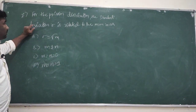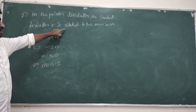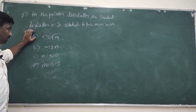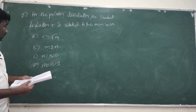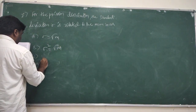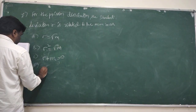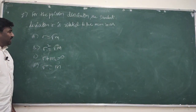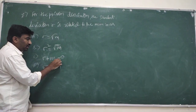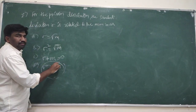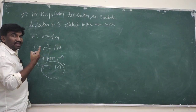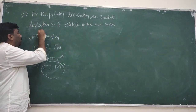Question number 7: for the Poisson distribution, the standard deviation σ is related to the mean m. We know σ = √m, or equivalently σ² = m. Options like σ² = √m or σ + m = 0 or σ = m are all incorrect. The correct relation is σ = √m, so option A is correct.